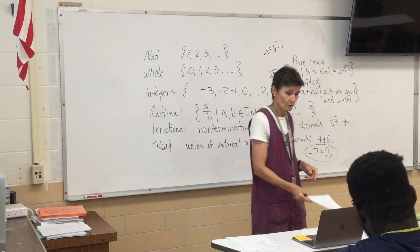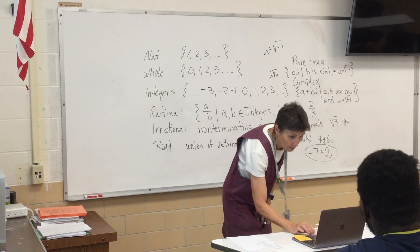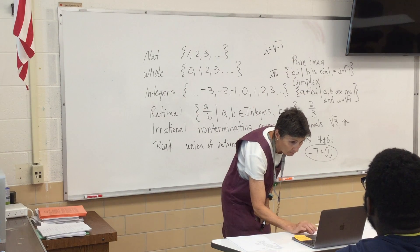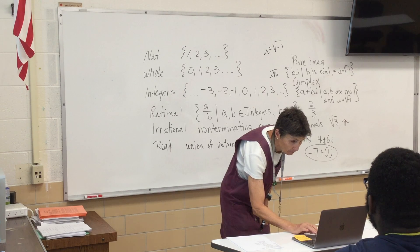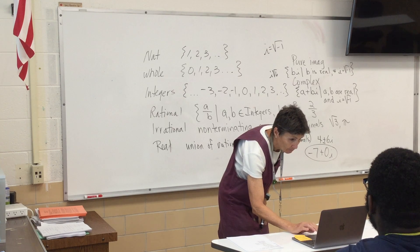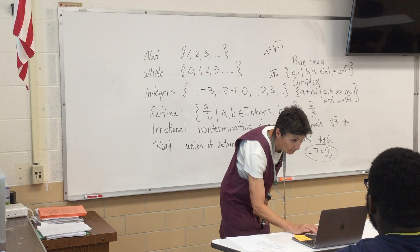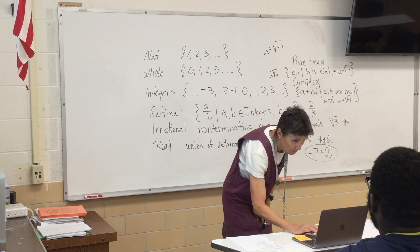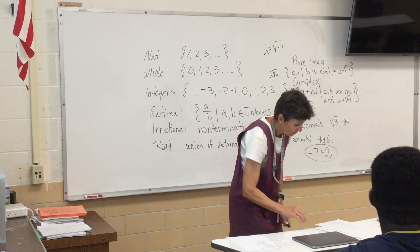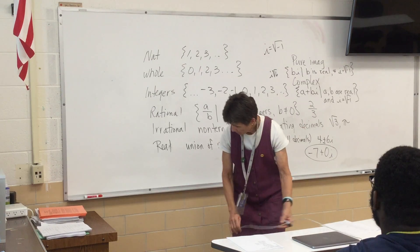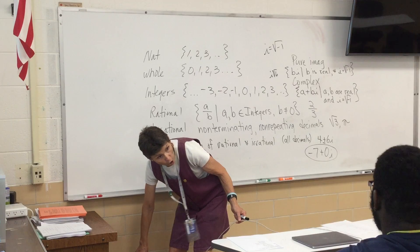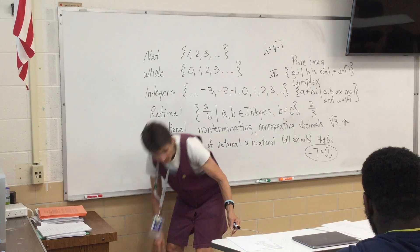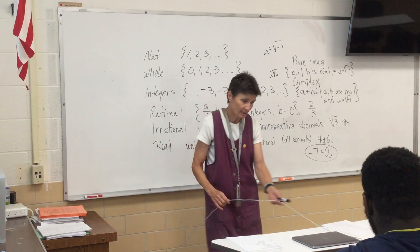Negative two-thirds — that's rational. Negative two-thirds is just negative two over three, so it's rational, real, and complex.